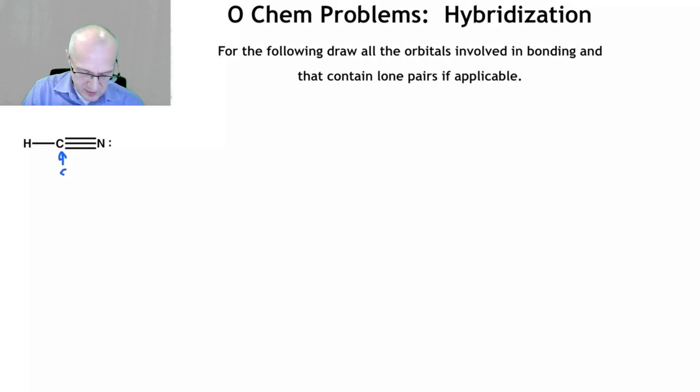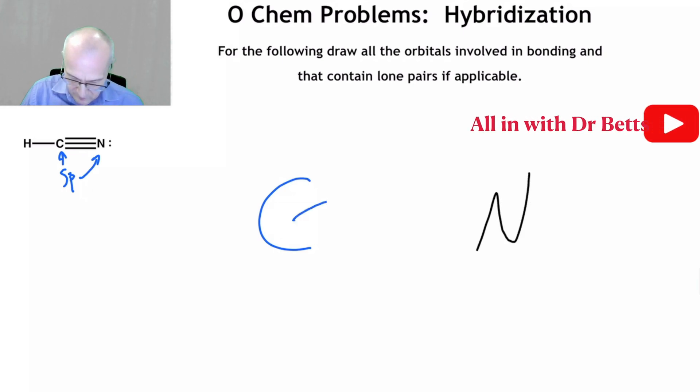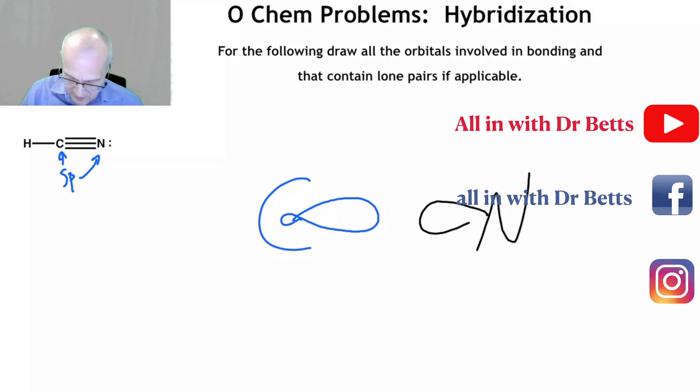So we have an SP carbon here and an SP nitrogen there. Carbon here and nitrogen here. There's my SP. There's another SP. Those are overlapping to make a sigma bond.